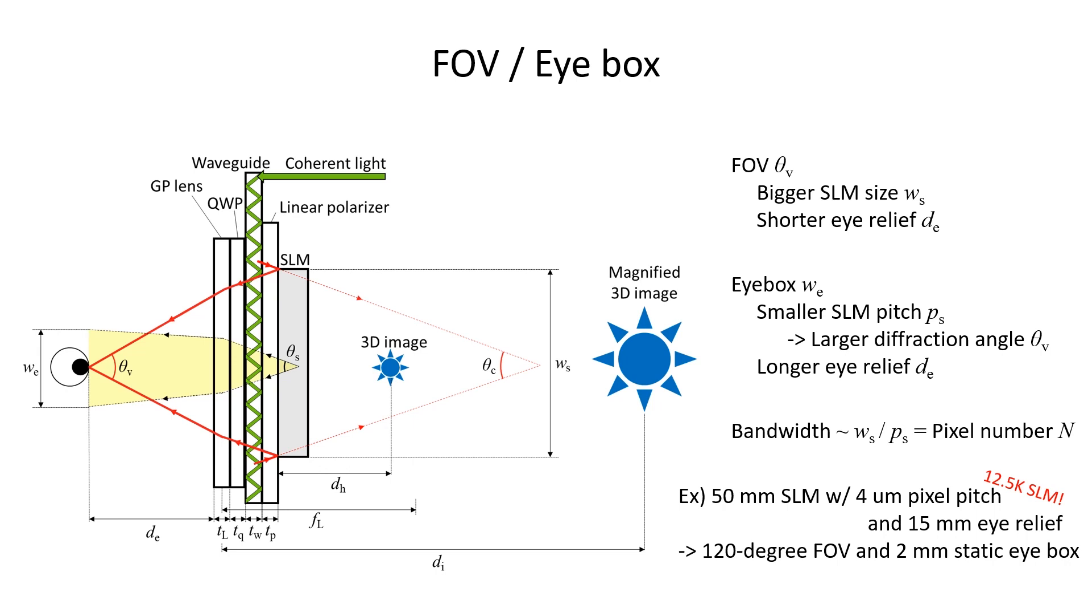So if we make holographic glasses with a 15mm SLM with a 4 µm pixel pitch and a 15mm eye relief, we can get a 120 degree field of view and a 2mm eye box. This means we need a 12.5K phase only SLM and that's why it is still a research prototype, probably for 10 years later.